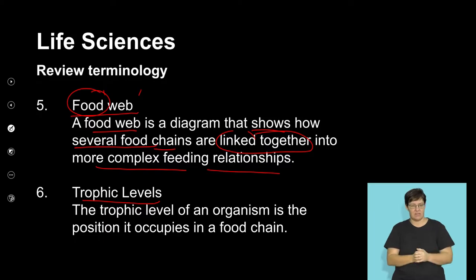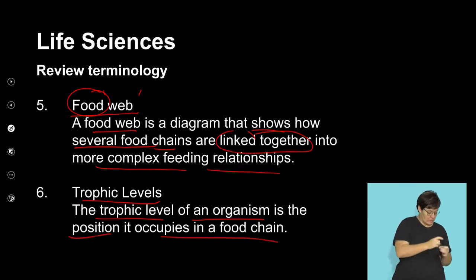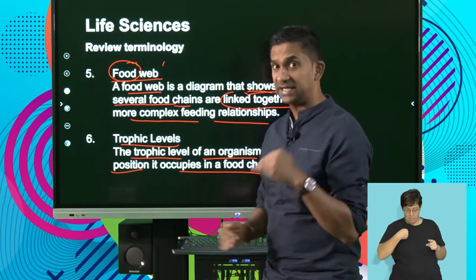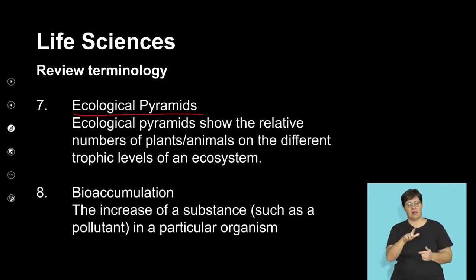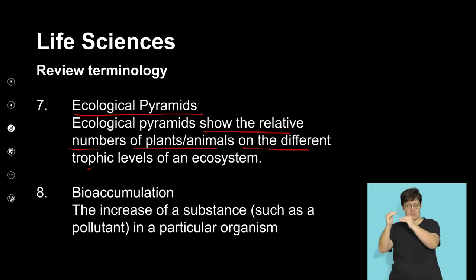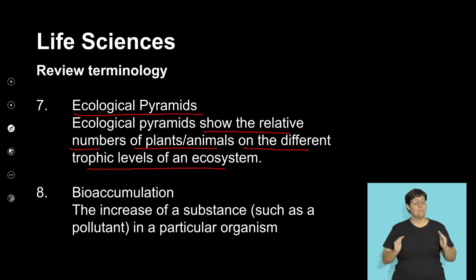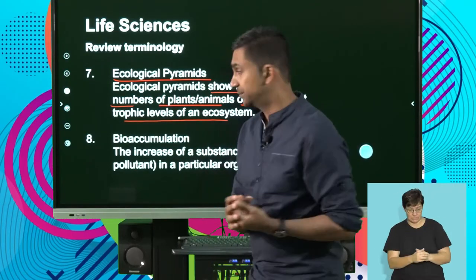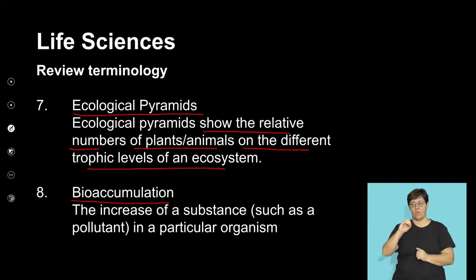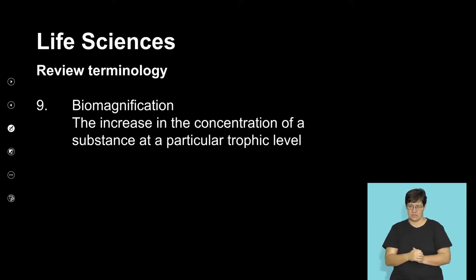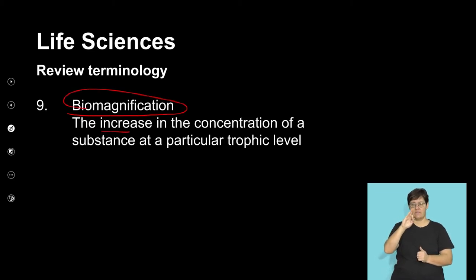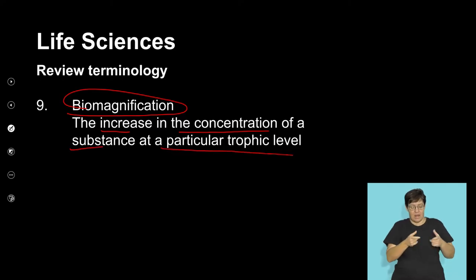Trophic levels refer to the level at which an organism is positioned in a food chain. An ecological pyramid shows the relative numbers of plants or animals at different trophic levels. Bioaccumulation refers to the increase of substances such as pollutants in an organism through a food chain, while biomagnification refers to the increase in the concentration of a substance at a certain trophic level in a food chain.